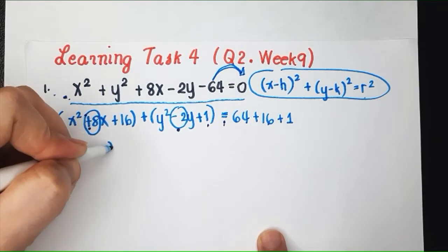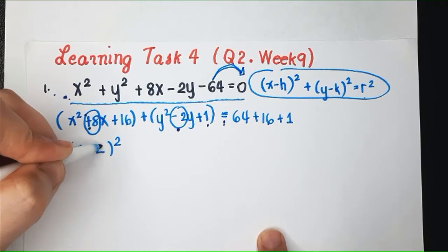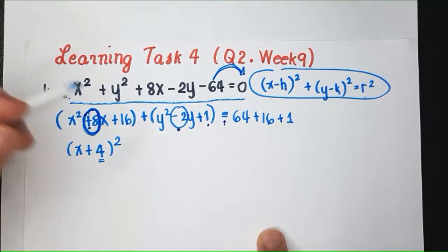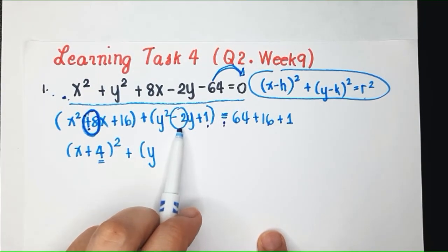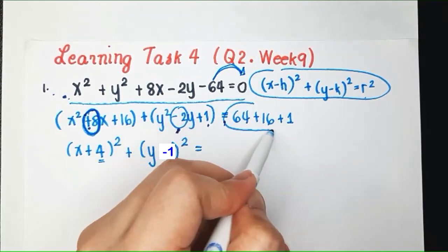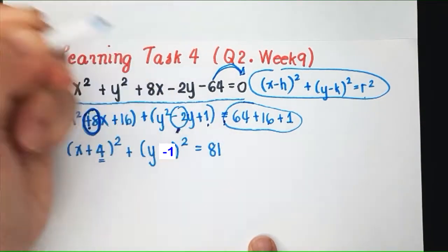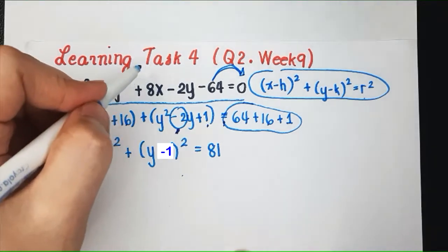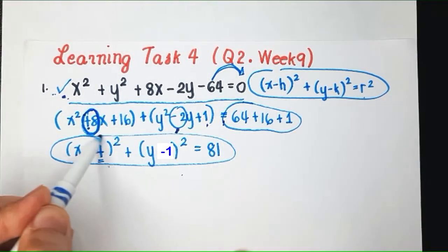And then we simplify. We can write this as x plus 4. How did I get the 4? That's just the answer when I divide this by 2. Plus, y minus 1 squared. And then you add this. What do you get? You'll get 81. And that's it. This is the center radius form of the given general form of the equation. This is the standard form.